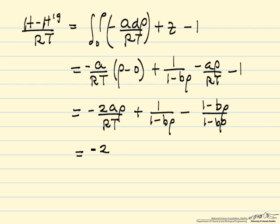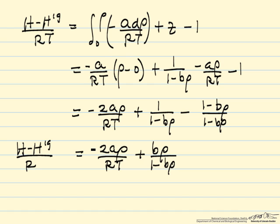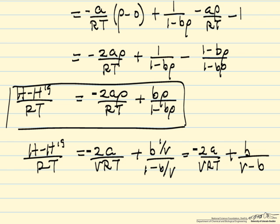So this is the dimensionless departure function. And then I've also converted it back into specific volume. So the departure function is related to the volume, the temperature, and these constants. And it's clearly non-zero for a Van der Waals equation of state.